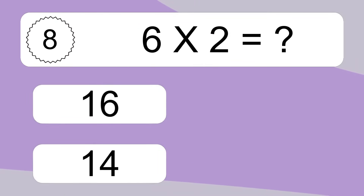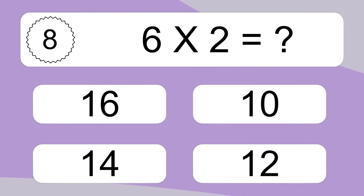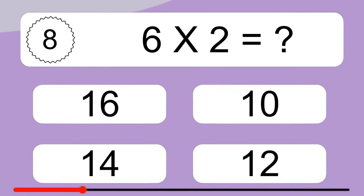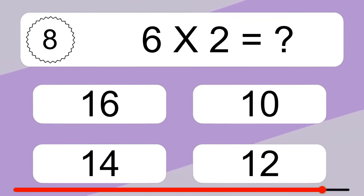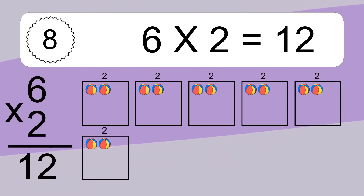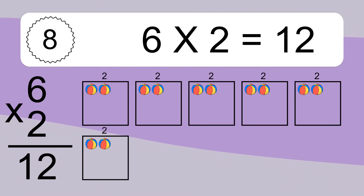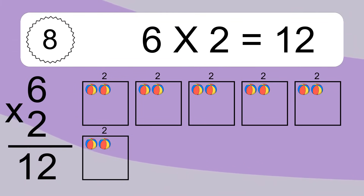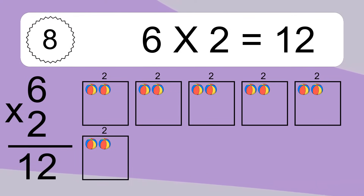6 times 2 equals what? 6 times 2 equals 12. We have 6 boxes and each box has 2 colorful balls inside. If you count all the balls in all the boxes together, you will have 6 times 2 balls. This equals 12 balls.